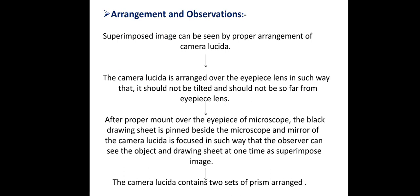Regarding arrangement and observation: a superimposed image can be seen by the proper arrangement of the Camera Lucida. The Camera Lucida is attached over the eyepiece lens in such a way that it should not be too tight and should not be too far from the eyepiece lens. After proper mounting over the eyepiece, the black drawing sheet is placed beside the microscope and mirror of the Camera Lucida. It is focused so that the observer can see the object and drawing sheet at one time as a superimposed image.